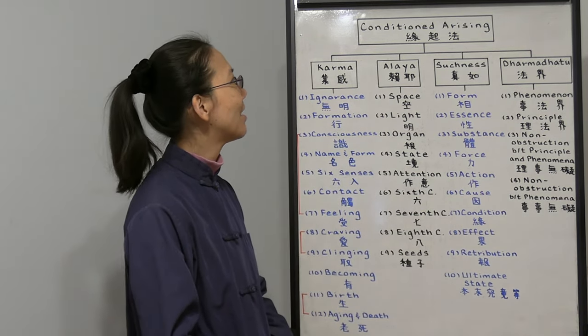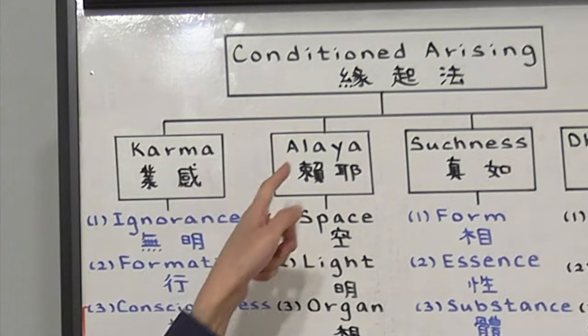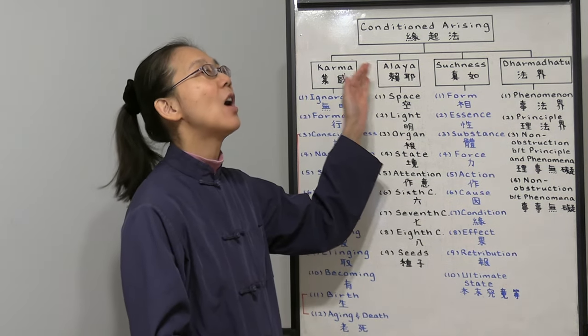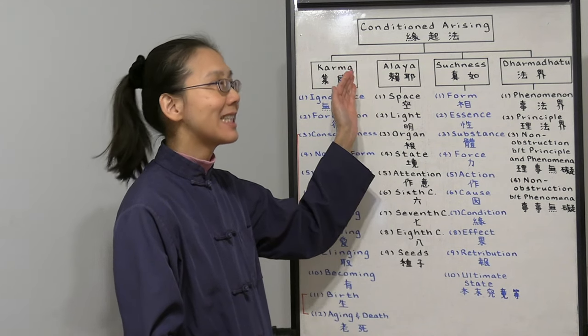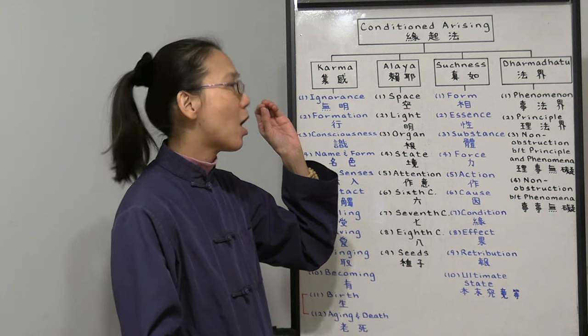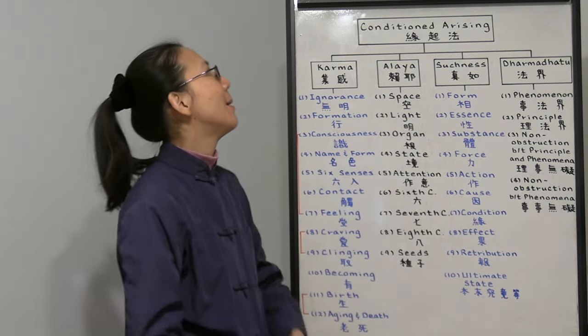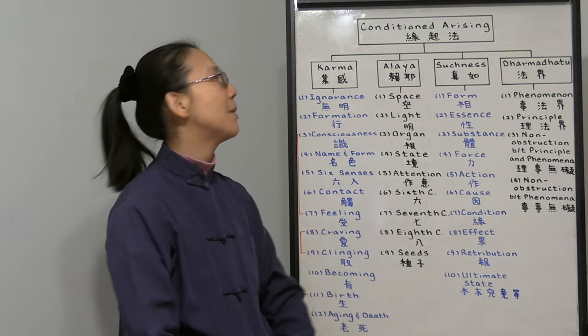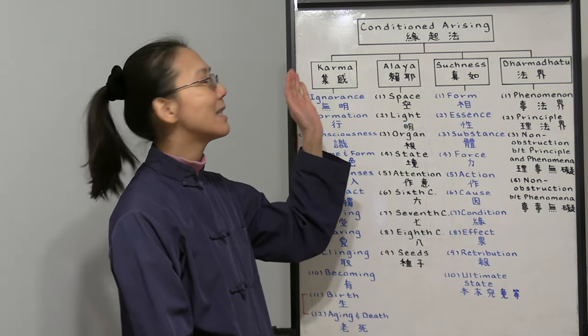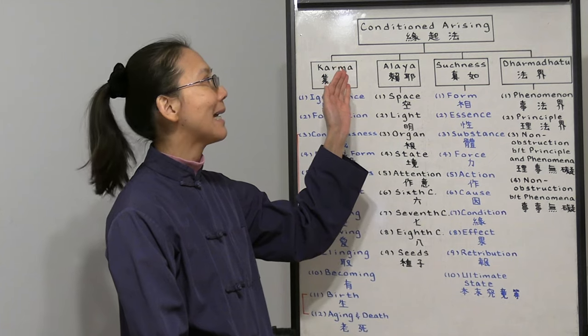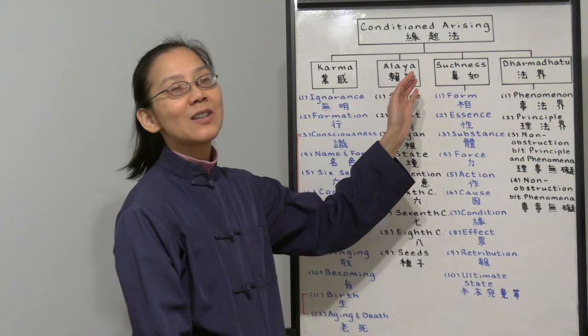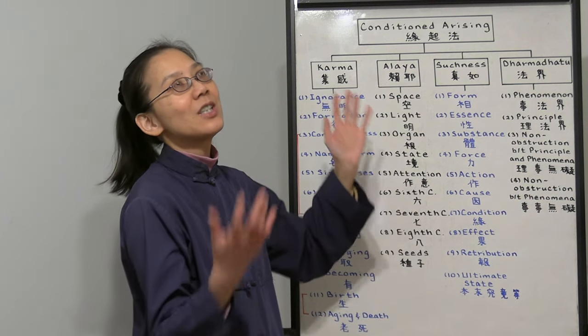The second kind of condition arising is alaya. Little do we know that karma actually happens in our own alaya consciousness, in our mind. This deluded mind of ours creates the world. Then we have the third type of condition arising. Life is not about karma. It's not about our deluded mind. It's actually about our true nature. Everything is created by our true suchness.